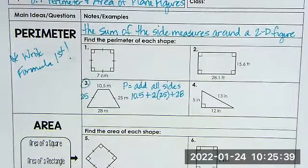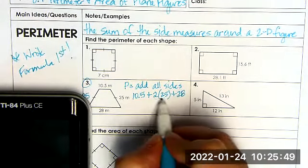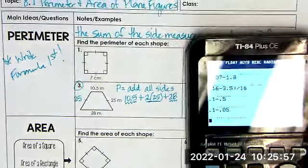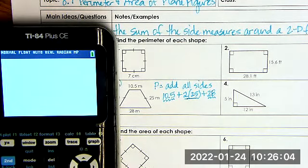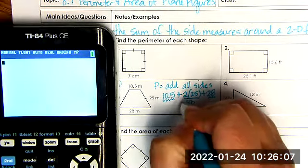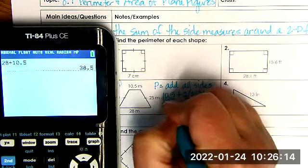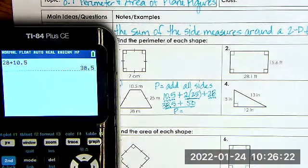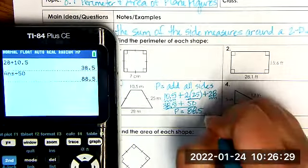Now in the calculator, because the commutative property, I can do this multiplication and this addition at the same time. We've got 2 times 25, that's going to obviously be 50 plus then we have 28 plus the 10.5, which is going to be 38.5. And then we add those two together, and we get the perimeter is 88.5.